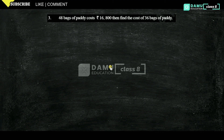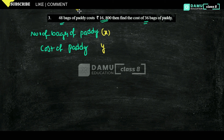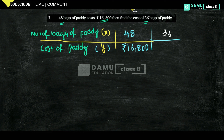In this module we are going to discuss the third question: 48 bags of paddy cost 16,800 rupees — find the cost of 36 bags. The two quantities given are number of bags of paddy and their cost. Let's take x and y for these. Number of bags x1 = 48, cost y1 = 16,800 rupees; next x2 = 36 bags, and cost y2 is what we have to find using direct proportion.